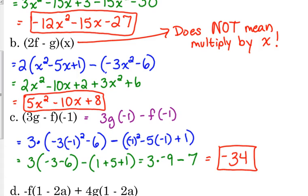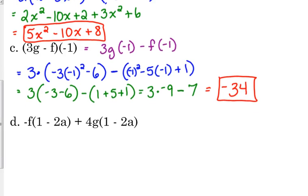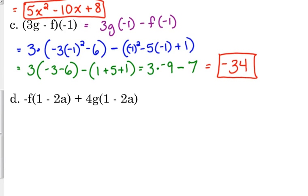Now, as I mentioned, you could have gone through the process. You could have said 3 times g minus f, simplified that expression, and then plugged in negative 1. It may have taken about the same number of steps. I don't know. I think it's easier to plug in the number as opposed to simplifying the expression first. Okay? Now, one more way that this can look is instead of having just an x or just a negative 1 that we're plugging in, then we could be asked to plug in another expression. Okay? In this case, we're plugging in 1 minus 2a. We're going to plug in 1 minus 2a in addition to creating this linear combination of negative f plus 4g.